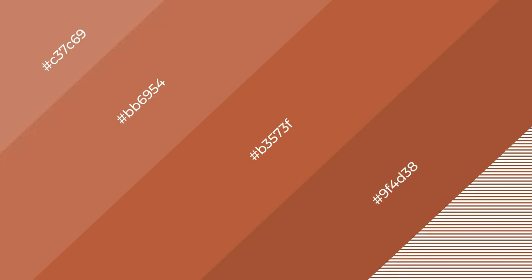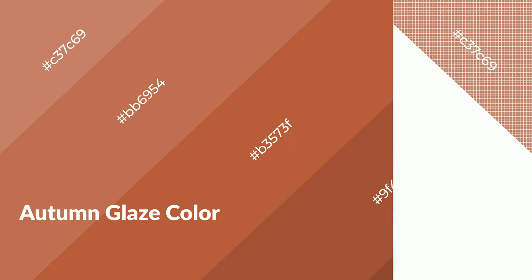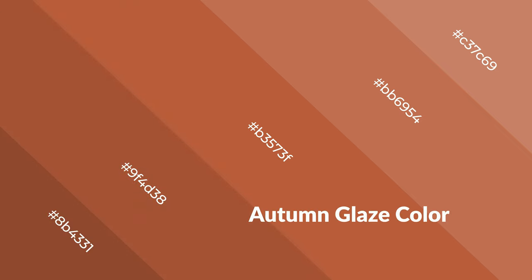Autumn glaze is a warm color and it emits cozier and active emotions. Warm colors are symbols of warmth, fire, heat, and sunshine. It also evokes joy, passion, love, and even anger. You can see them used in restaurants and gyms.